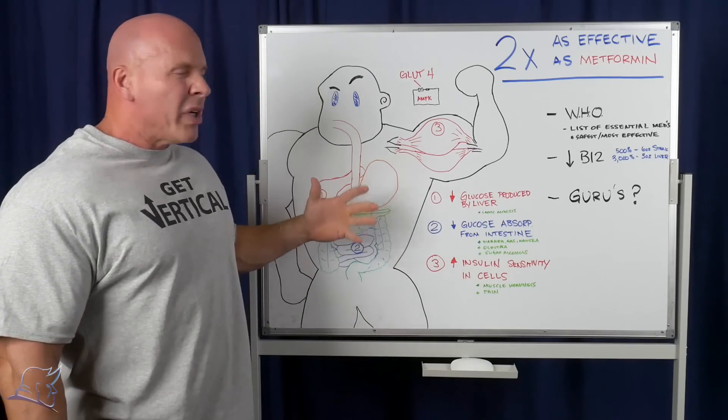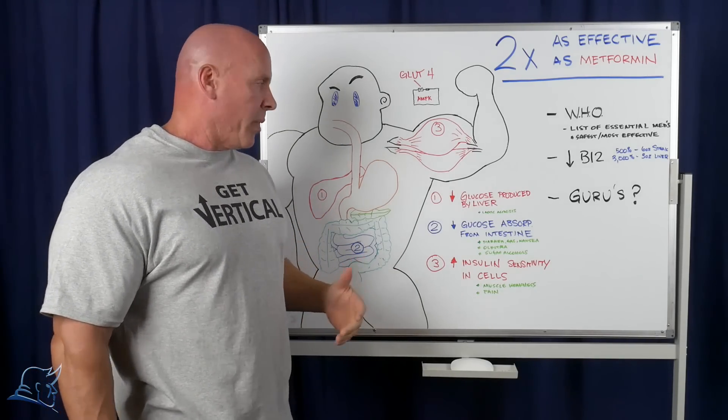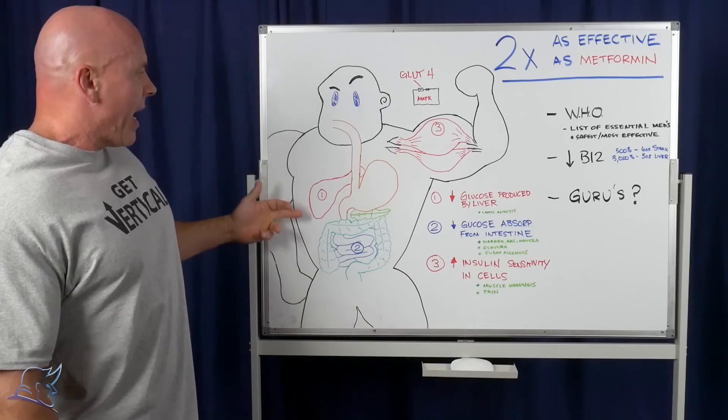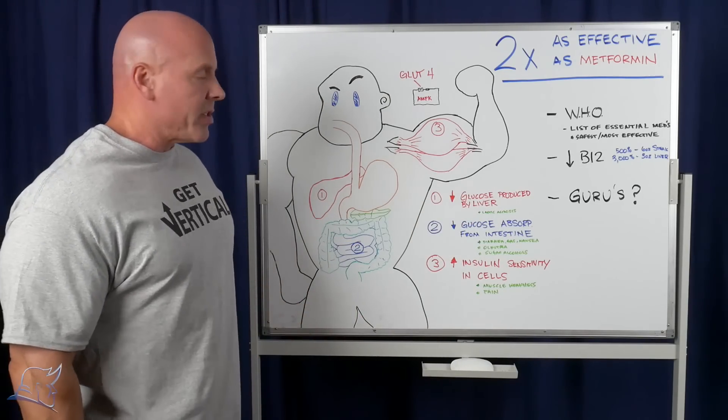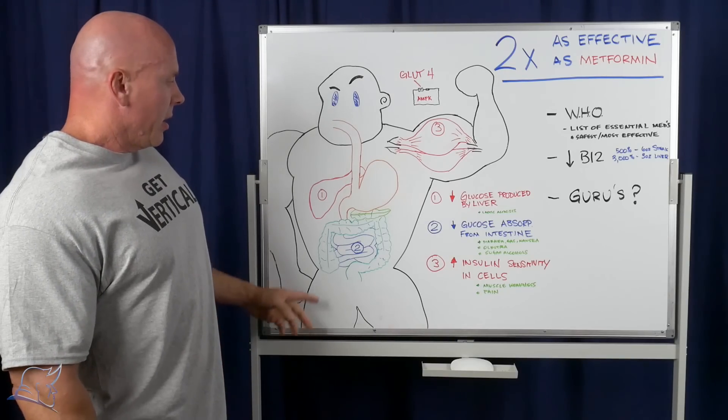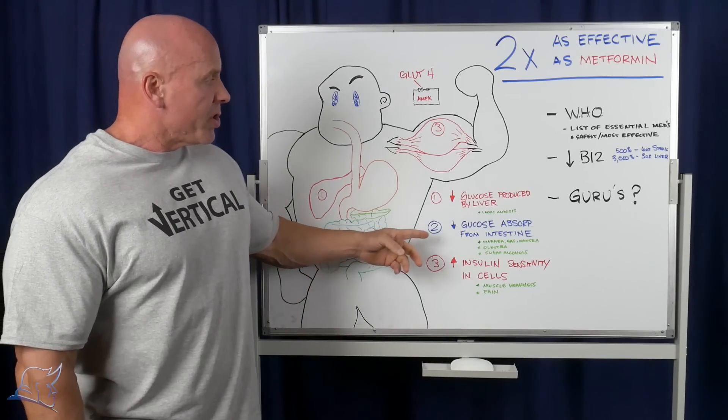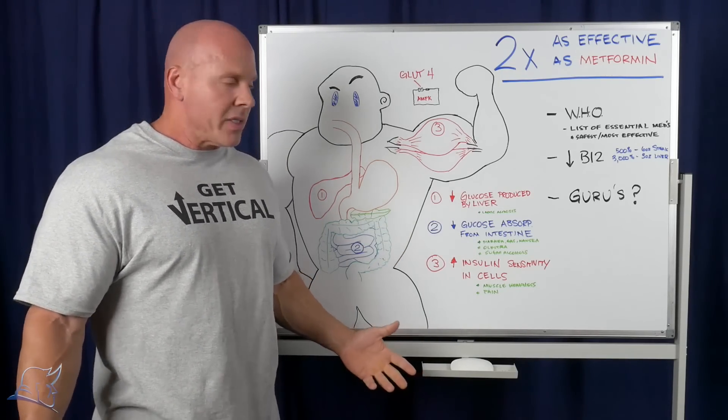I want to talk through briefly about the mechanisms of action of metformin. One of the first mechanisms of action happens in the liver and it reduces glucose that's produced by the liver, gluconeogenesis is reduced. Secondly, in the small intestine, it reduces glucose absorption from the intestine.